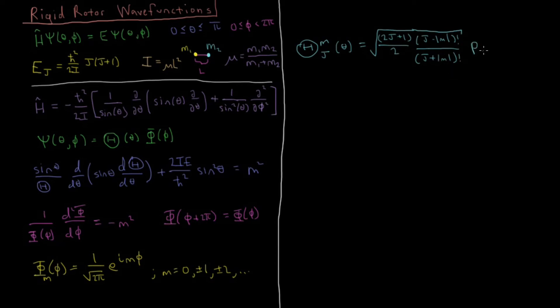And then times this function, p absolute value of m, j, and the variable in this function is cosine theta.